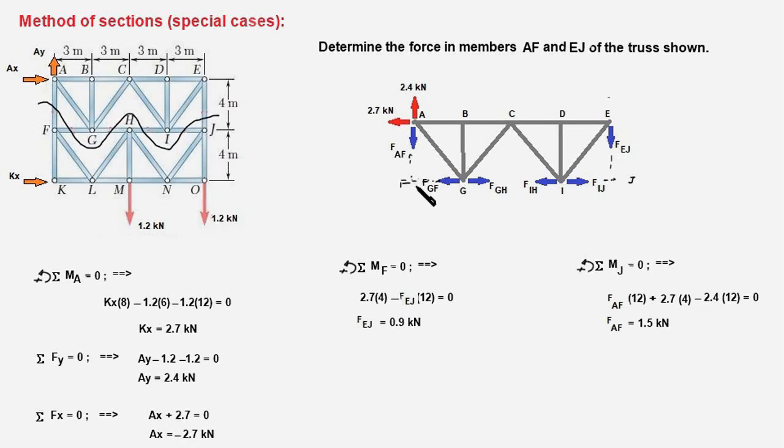And when we take moment of all the forces about point F the moment of all these forces except F EJ would be 0, and our moment equation will then have a single unknown.